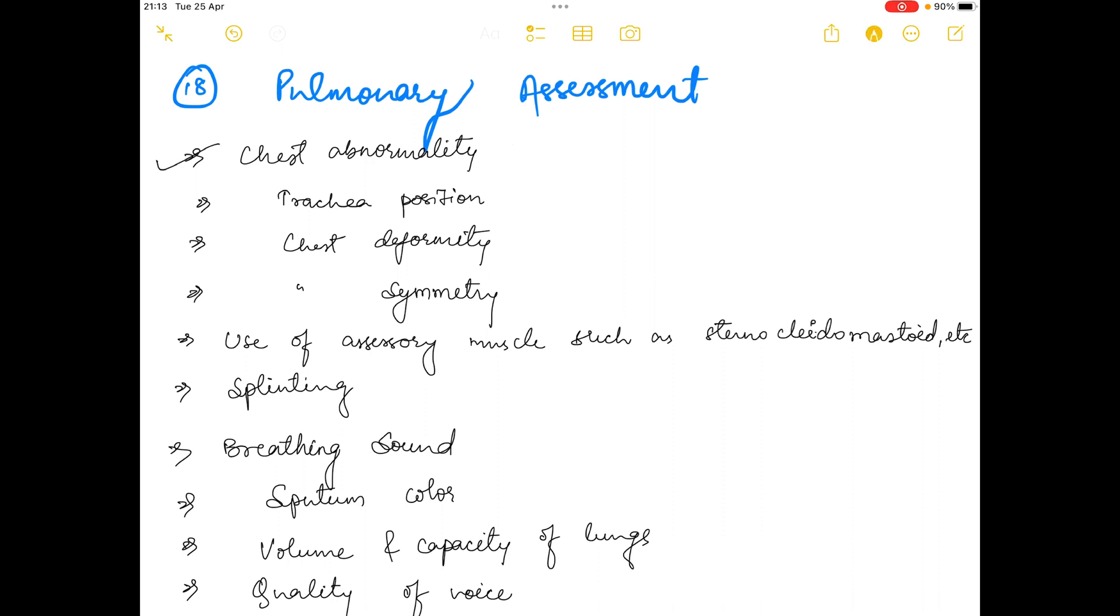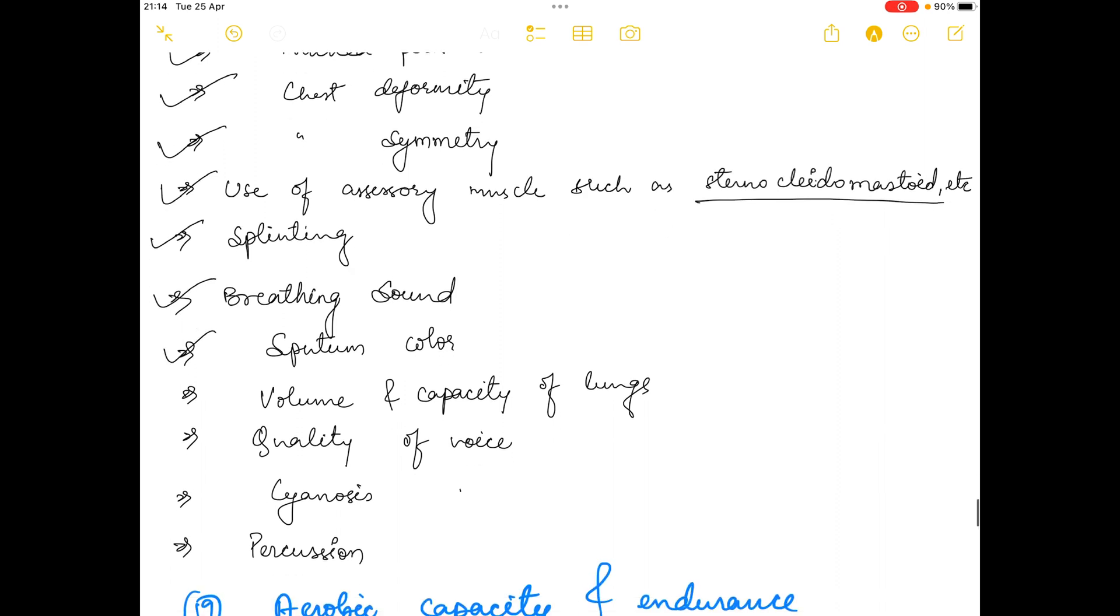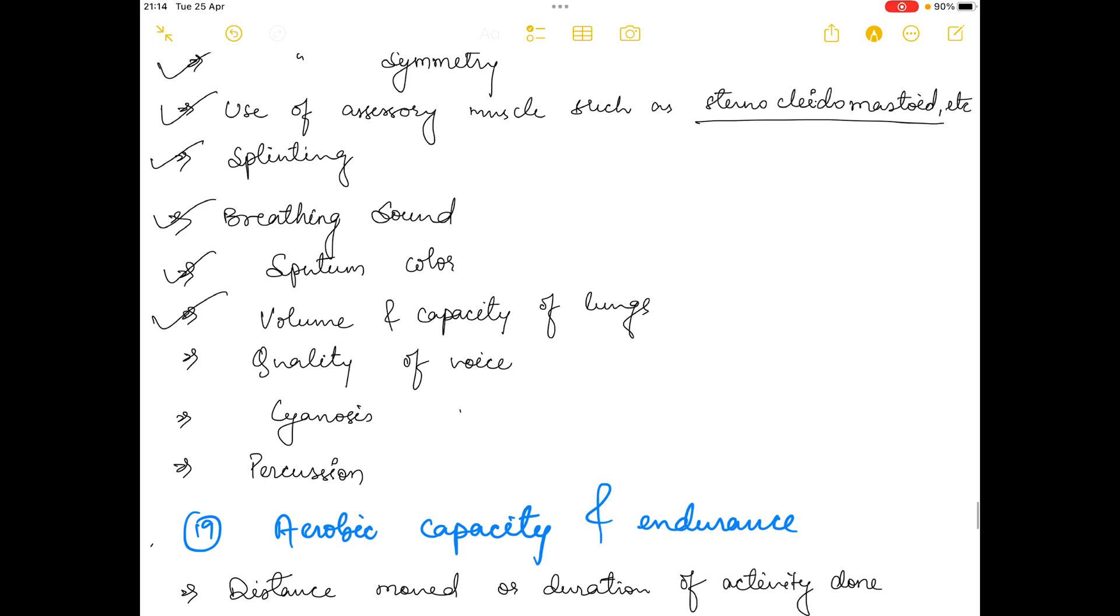The next thing is pulmonary assessment. In pulmonary assessment, we talk about chest abnormality, position of trachea, chest deformity, chest symmetry, use of accessory muscles such as sternocleidomastoid, splinting breathing, breathing sounds, sputum color, volume and capacity of lungs, quality of voice, cyanosis, and percussion.